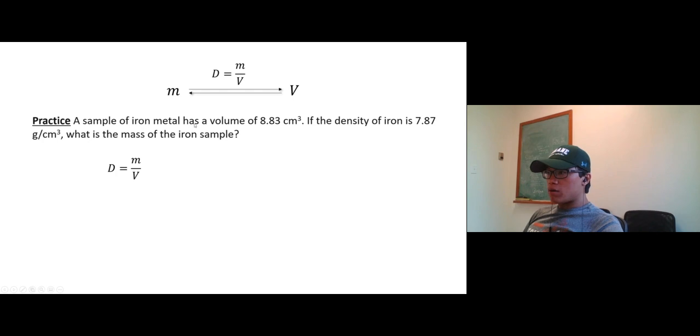Let's try this one. A sample of iron metal has a volume of 8.83 centimeters cubed. If the density of iron is 7.87 grams per centimeter cubed, what is the mass of the iron sample? We have volume, we have density, so we can find mass.